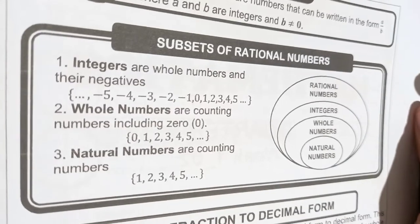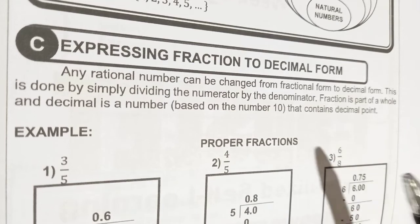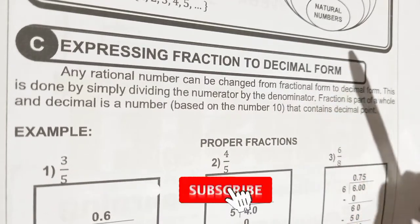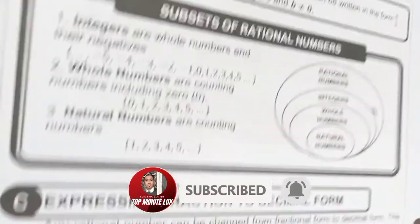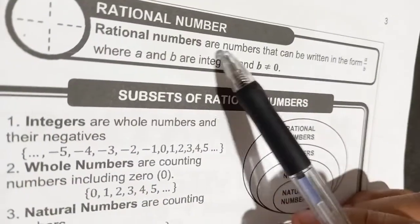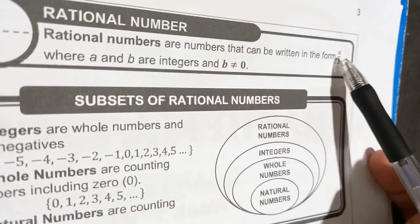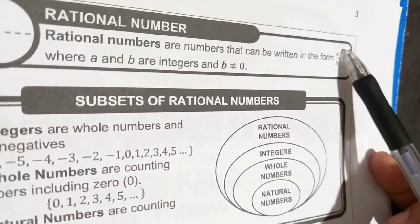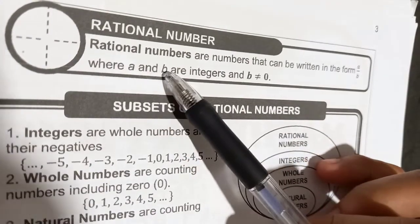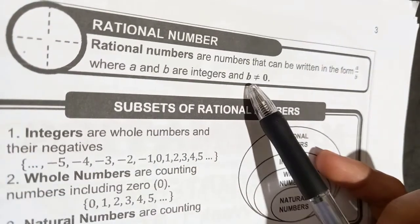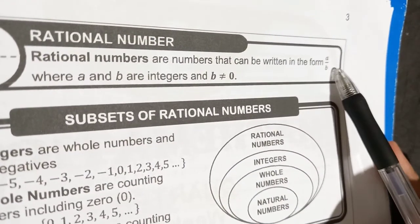This time, our lesson will be expressing fractions in decimal form. But before going into this, let us have first an overview regarding rational numbers. Rational numbers are numbers that can be written in the form of A over B, where A and B are integers and B must not be equal to zero. If B becomes equal to zero, it will become undefined.